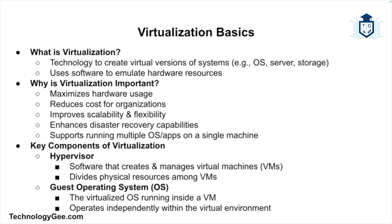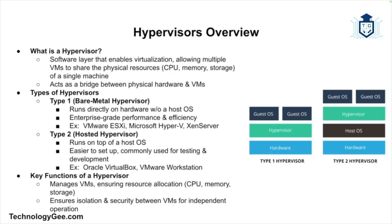There are two key components to virtualization: the hypervisor and the guest operating system. The hypervisor is the software layer that enables virtualization. It sits between the physical hardware and the virtual machines, allowing multiple VMs to share the physical resources of a single machine, such as the CPU, memory, and storage.